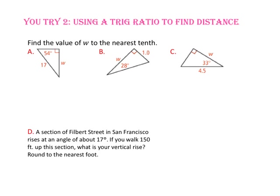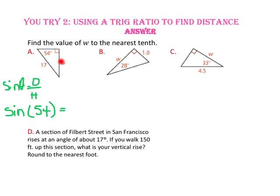Pause the video and do U-try number 2. Find the value of W to the nearest tenth. In part A, W is the side opposite our given angle, and 17 is the length of the hypotenuse. Since sine is opposite over hypotenuse, let's use the sine ratio. Substitute 54 degrees in for theta, W in for the opposite side, and 17 in for the hypotenuse. Use the calculator: type in 54, then the sine button, then multiply by 17. W is approximately 13.8 units long.